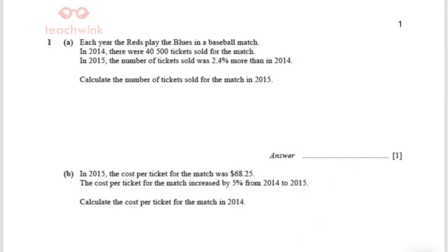Each year, the Reds played the Blues in a baseball match. In 2014, there were 40,500 tickets sold for the match. In 2015, the number of tickets sold was 2.4% more than in 2014. Calculate the number of tickets sold for the match in 2015.